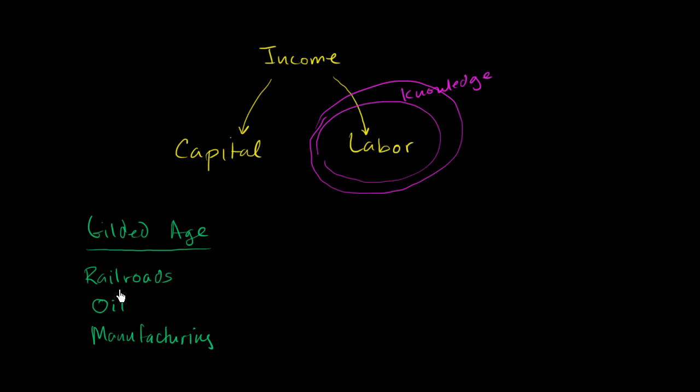And in all of these, labor is a bit of a commodity. You just need people to kind of nail the railroad ties in and things like that. You need people to just work on the rig. You need people to work on the assembly line. And the Industrial Revolution was really a process of taking these crafts and turning them into more commodity labor.